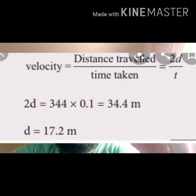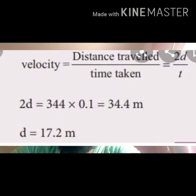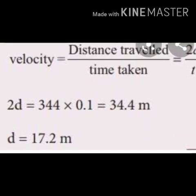The speed of sound is approximately 340 meters per second. Using velocity = distance traveled / time taken = 2d/t. For an echo, 2d = 344 × 0.1 = 34.4 meters, so d = 17.2 meters. At least 17 meters from the source of sound is required for an echo.